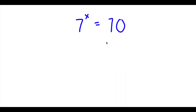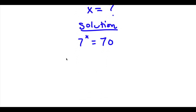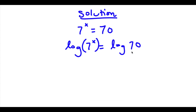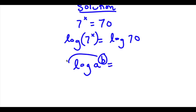Alright, so the second bonus problem: I have 7 to the power of x is equal to 70. Now I want to solve for the value of x. The first thing I'm going to do is take the log on both sides. So now I have log of 7 to the power of x is equal to log of 70. An important property of logarithms is that if I have something in the form log a to the power of b, I can move the exponent b to the front, giving b times log a.